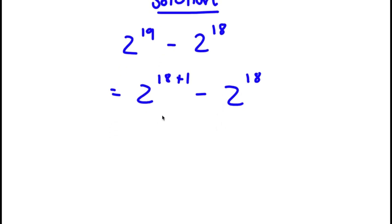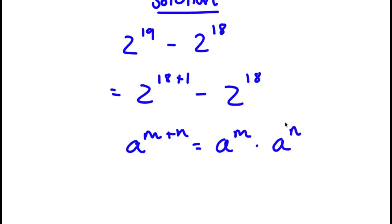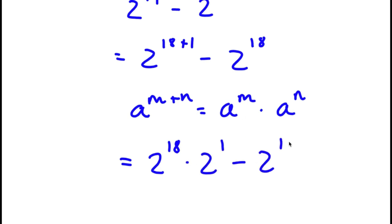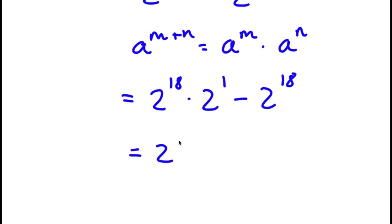If I have something in the form a to the power of m plus n, this is equal to a to the power of m times a to the power of n. So 2 to the power of 18 plus 1 equals 2 to the power of 18 times 2 to the power of 1, and I have minus 2 to the power of 18 at the end. From here, I can factor out 2 to the power of 18, giving 2 to the power of 18 times 2 to the power of 1 minus 1.